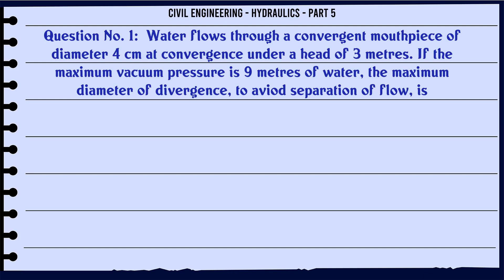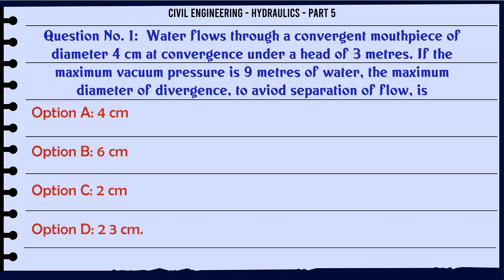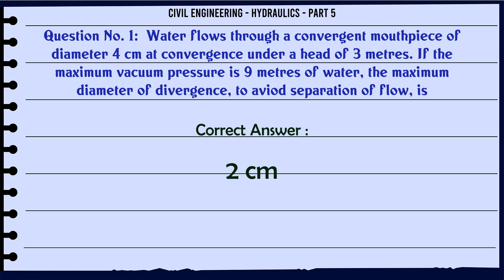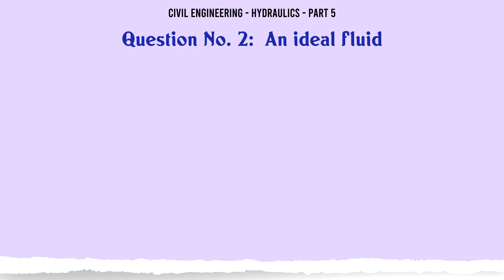Water flows through a convergent mouthpiece of diameter 4 cm at convergence under a head of 3 m. If the maximum vacuum pressure is 9 m of water, the maximum diameter of divergence to avoid separation of flow is: a. 4 cm, b. 6 cm, c. 2 cm, d. 3 cm. The correct answer is 2 cm.